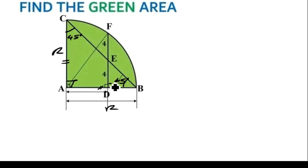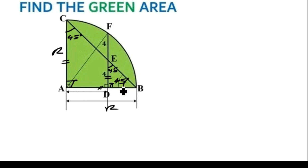This angle at D is 90 degrees. So if it is 90 degrees and the angle at B is 45 degrees, then automatically the remaining angle here is also 45 degrees. So if you have two angles of 45 degrees each, this length of 4 is the same as length BD which is 4. So if the length from D to B is 4 and the length from A to B is R, then the length from A to D is R minus 4.